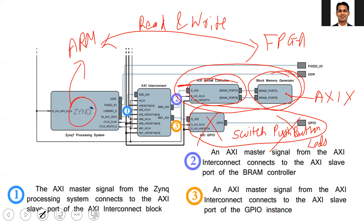This is your ARM processor where you write your C code, which is converted into a set of instructions that are executed one by one. When the ARM processor wants to communicate with the block RAM — say it wants to do a write transaction — it calls the appropriate drivers, and these drivers generate the appropriate AXI transaction. We need to use the AXI interconnect because the ARM processor works on the AXI3 protocol while the FPGA works on the AXI4 protocol, so conversion is needed. Also, the ARM processor works at a higher clock frequency while the FPGA works at a lower clock frequency, so clock domain conversion is also taken care of by the AXI interconnect.